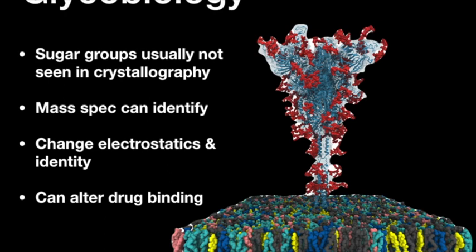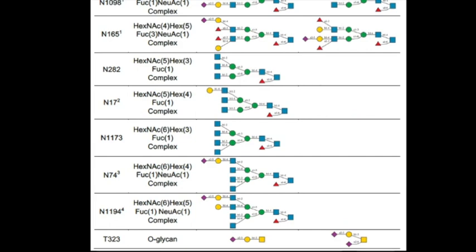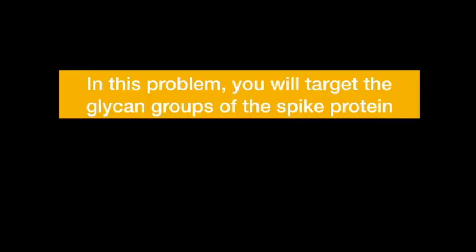Of course glycans can also alter the binding of drugs. For instance, if you design a small molecule drug that binds really well to some small part of the blue protein, if it can't even get past the glycan groups to approach that site, what's the point? These glycan groups are actually extremely complicated — it's not just one or two different sugar groups that attach. It's a very complex mixture as shown in this table, with many different residues and many asparagins that are actually glycosylated.